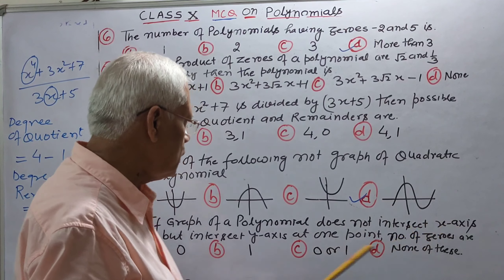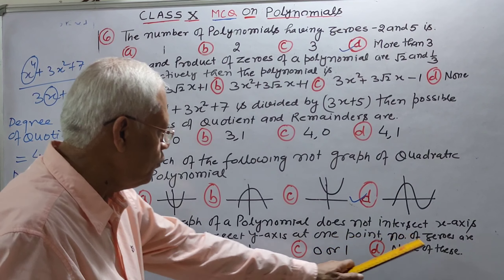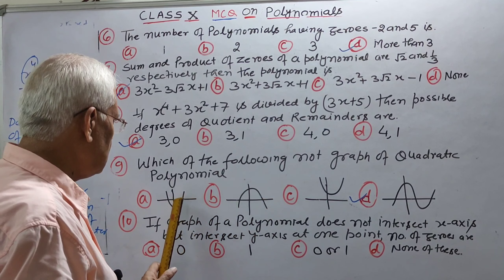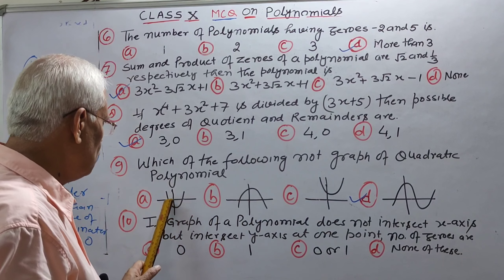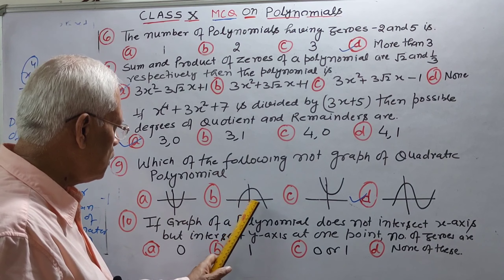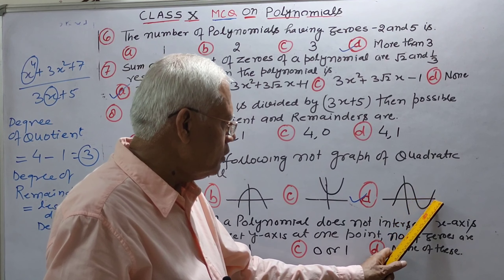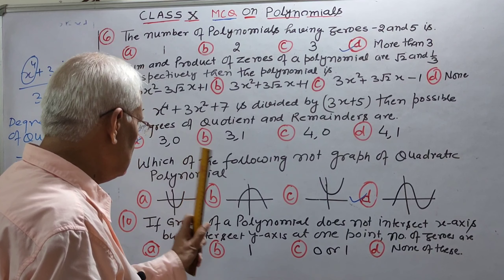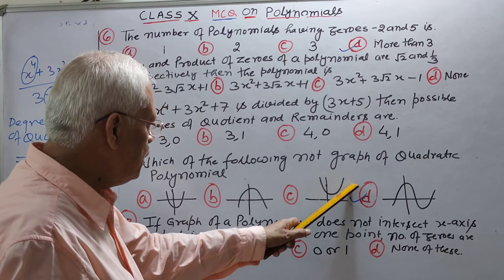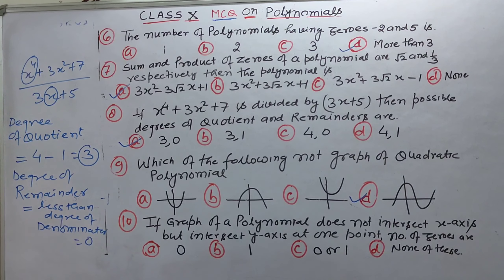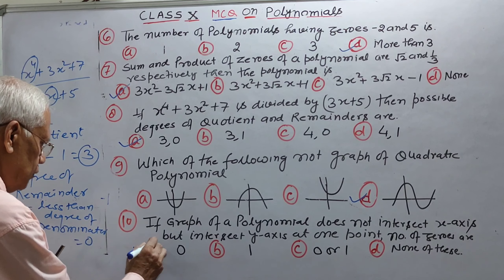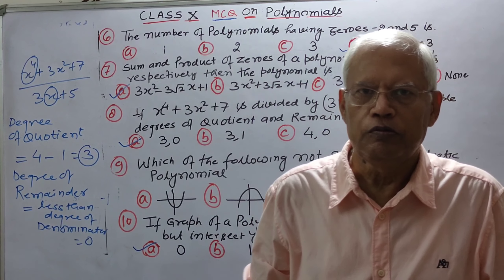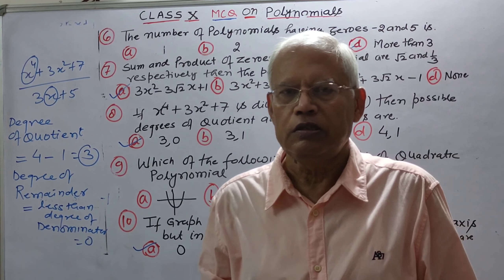Question ten: graph of a polynomial does not intersect x-axis but intersects y-axis at one point. Zeros are? Koi bhi polynomial x-axis par jitne point par intersect karta hai, uske zeros utne hi hote hain. Yeh x-axis ko intersect nahin kar raha hai, toh uske zeros zero honge. So the answer is A.